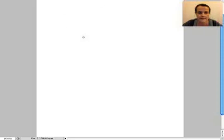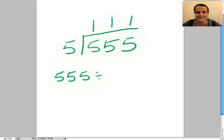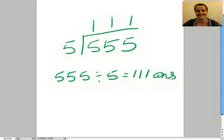So let's start off with something really easy. We're going to go 555 divided by 5. 5 into 5 goes once. 5 into 5 goes once. 5 into 5 goes once. So there that leaves us with 555 divided by 5 gives us 111. 111 answer. Good.